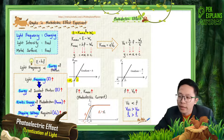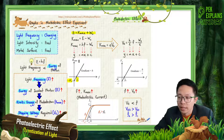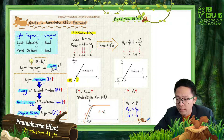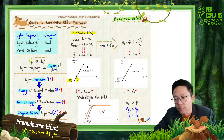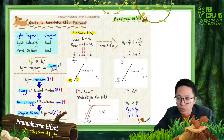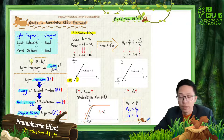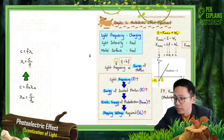From there, we rearrange to get the y equal to mx plus c equation. From there, we can know which one is y, which one is x, which one is the gradient. Then we substitute F equal to 0 — what is Kmax? And then we substitute Kmax equal to 0 — what is F? That's how we do it.